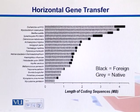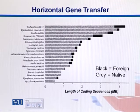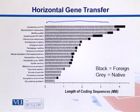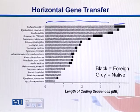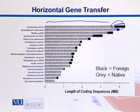In this chart, we have the length of coding sequences and the proportions which are coming from foreign elements versus native ones. Gray represents the native genes and black ones are coming from foreign sources — that is the indication of horizontal gene transfer. We can see that mostly in E. coli K12, there is the biggest proportion of foreign genes.